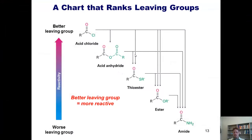This chart rates leaving groups from best to worst. Because chloride is such a great leaving group, acid chlorides are super reactive and they're the most reactive in the series. NH2- is a very bad leaving group and that's the reason why amides are the least reactive in this series.